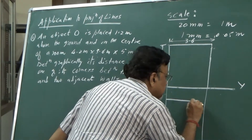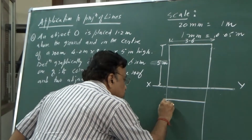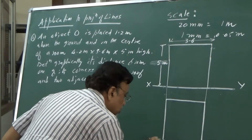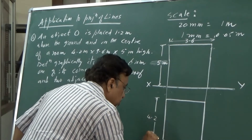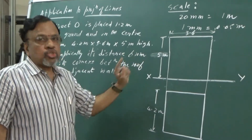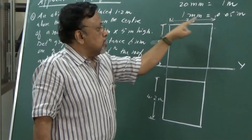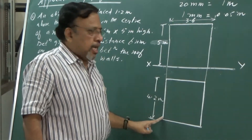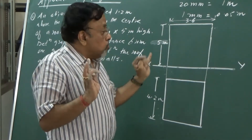In the top view, the other dimension is the length. Length is given as 4.2 meters, which equals 84mm at the chosen scale. So I mark 84mm in the top view. Now, as you can see, we have indicated the orthographic projection of the room: in the front view we see height and breadth, and in the top view we see breadth and length, so together we can visualize the full room.